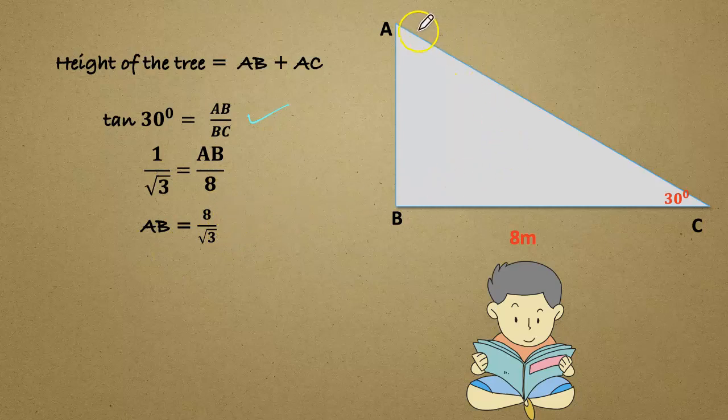Now we have to find the length of the side AC, the hypotenuse side. We can use cos 30 degree. Cos 30 degree equals BC divided by AC.